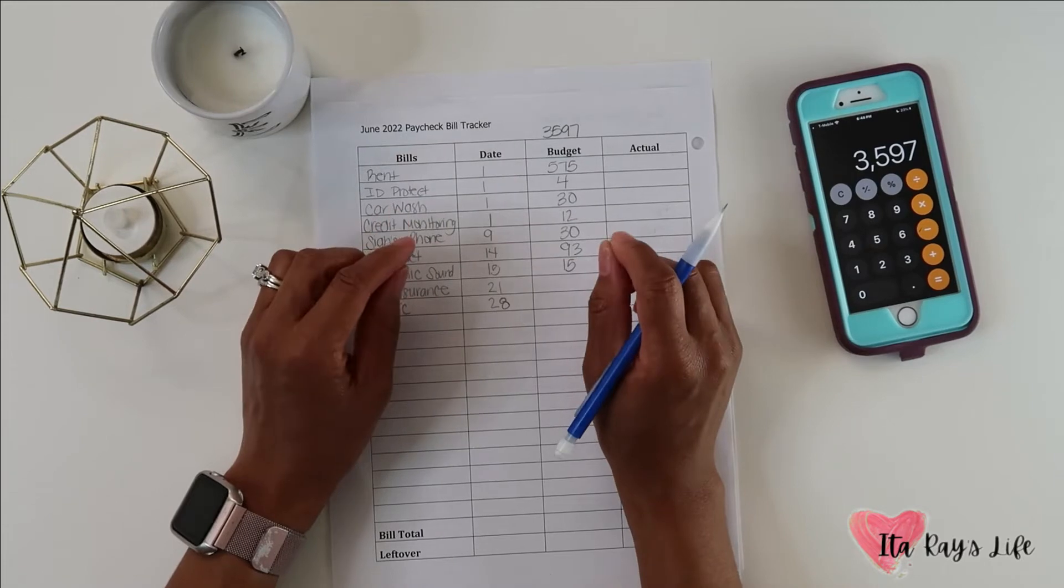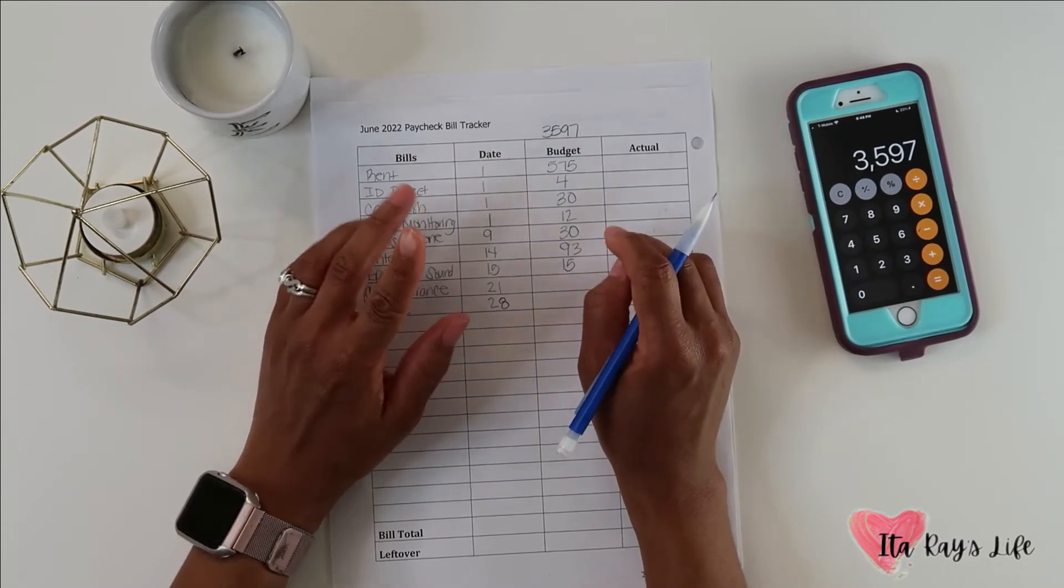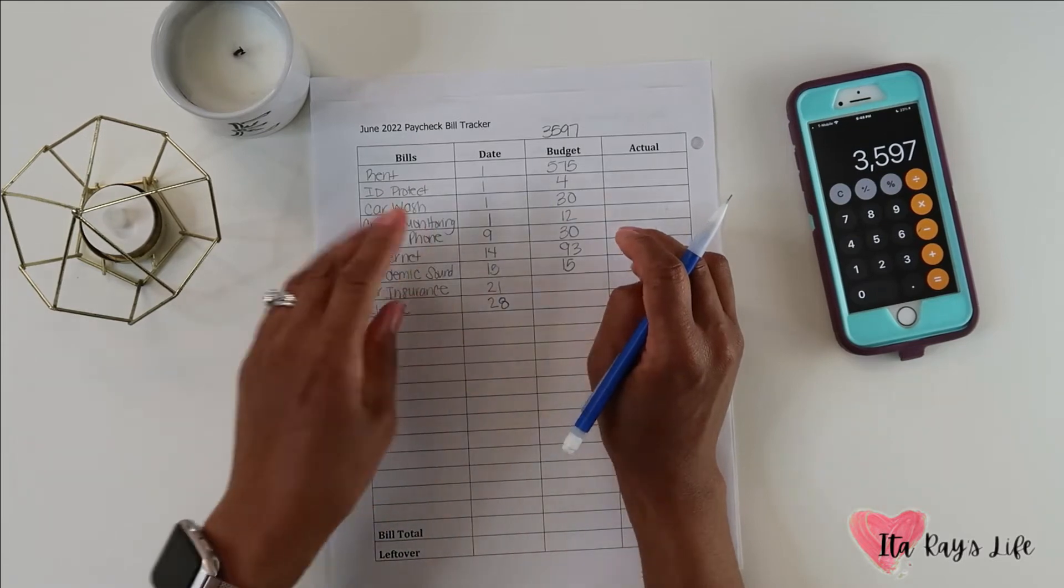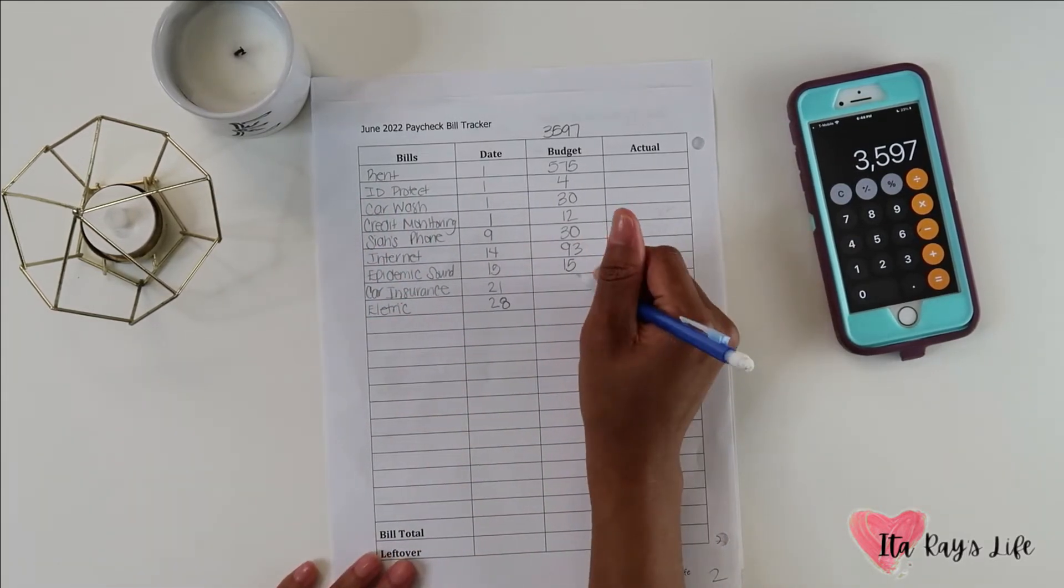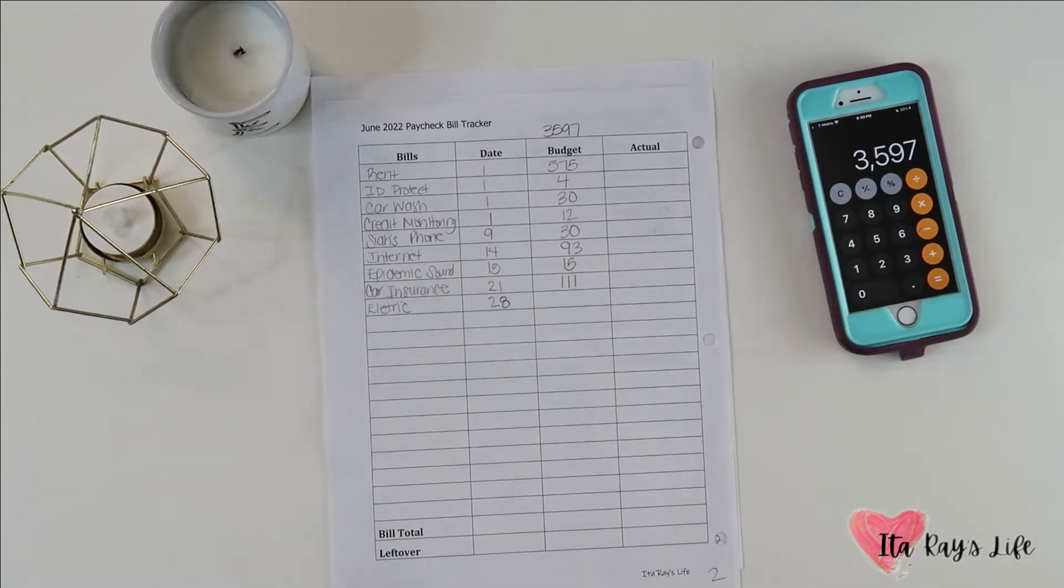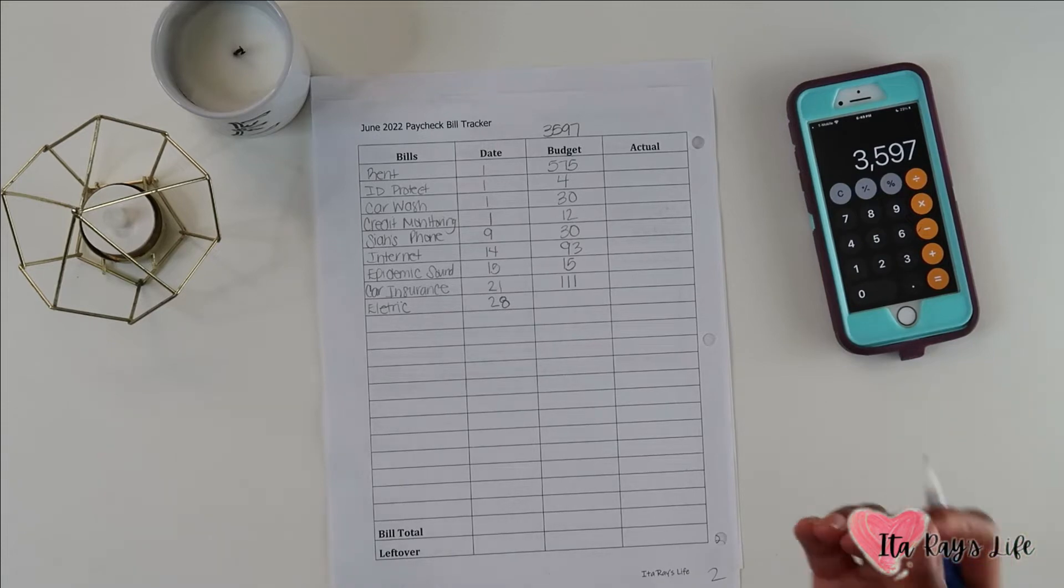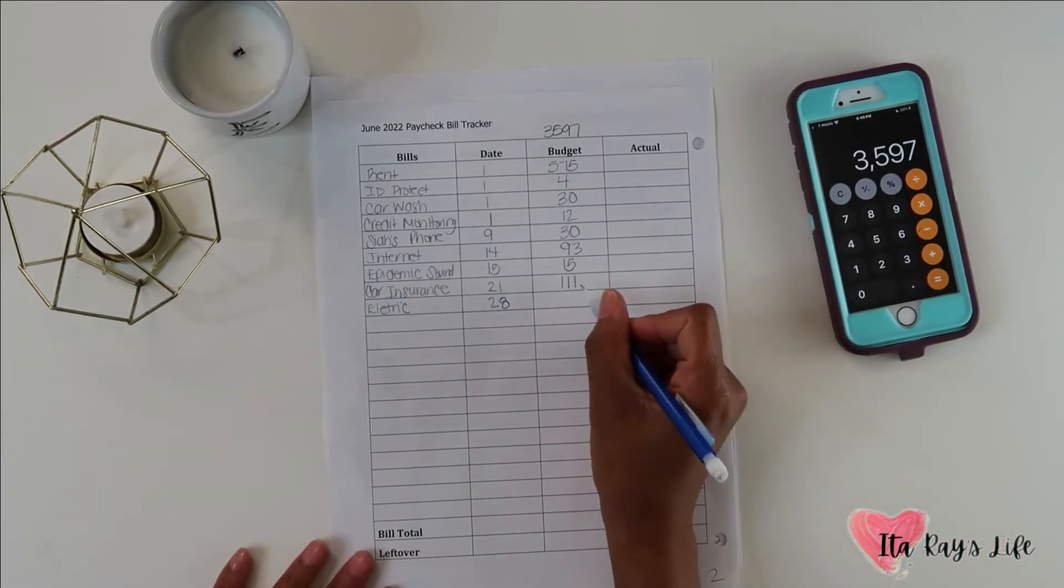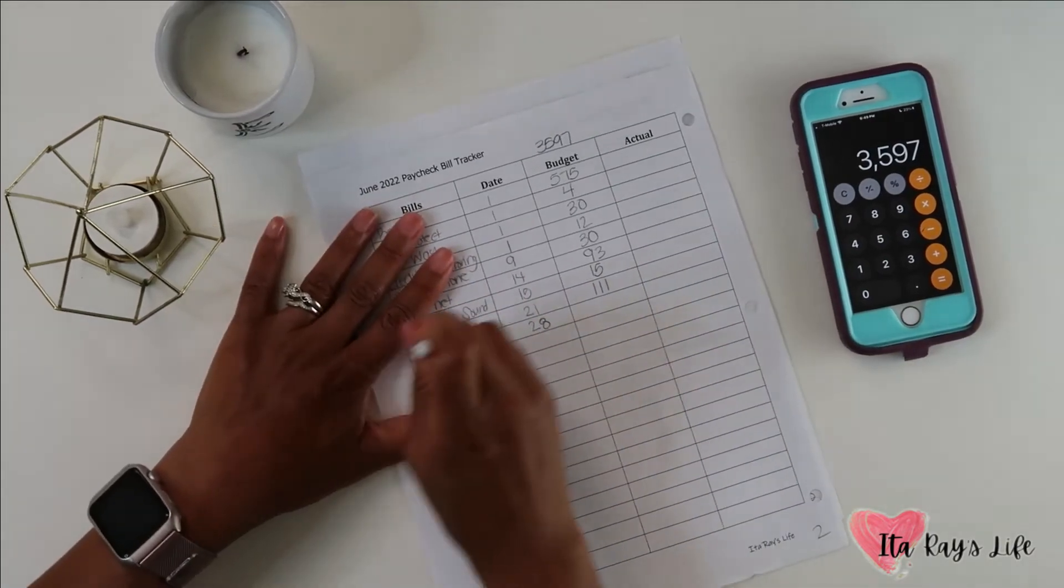Car insurance went up. My daughter and I split the car insurance. Her portion is higher because she's only, well she's about to be 20. Hers is way higher so I just said whatever, she'll continue to pay the same amount and I pay the difference that happened with inflation. So my car insurance went up to $111.